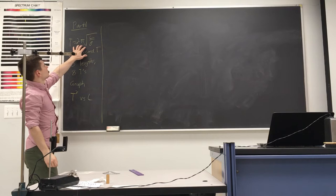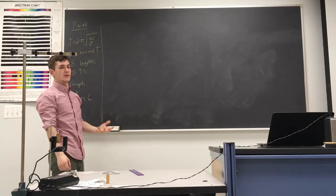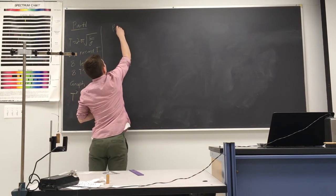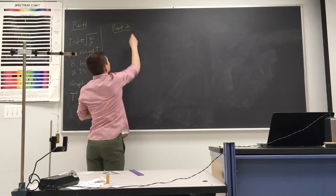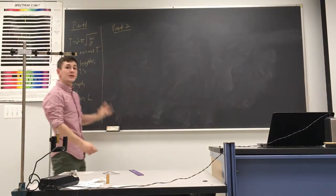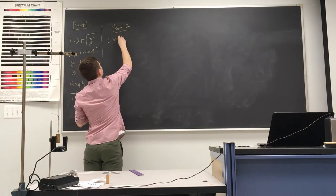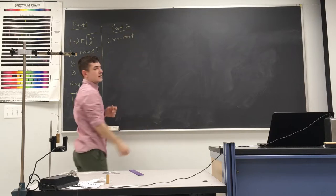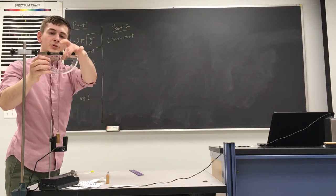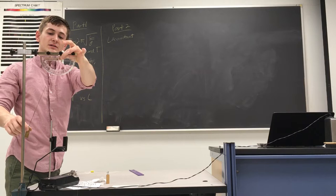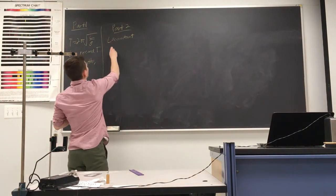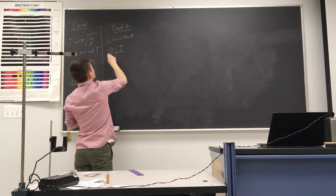This equation works for small angles and simple pendulums, but why doesn't it work for larger angles? That's what we'll figure out in part two. In part two, instead of changing the length and seeing how the period changes, we're going to keep the length constant and change the amplitude of oscillation. The first angle we want to do is 10 degrees.